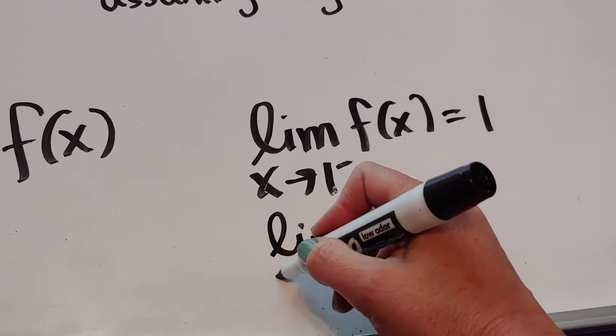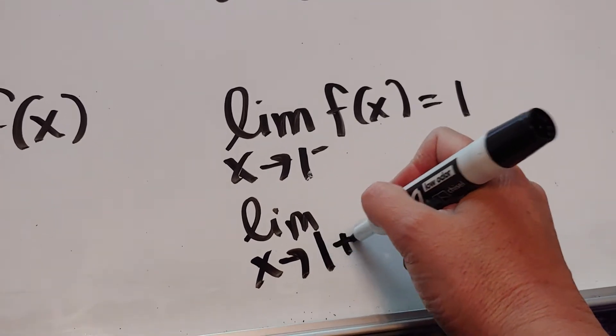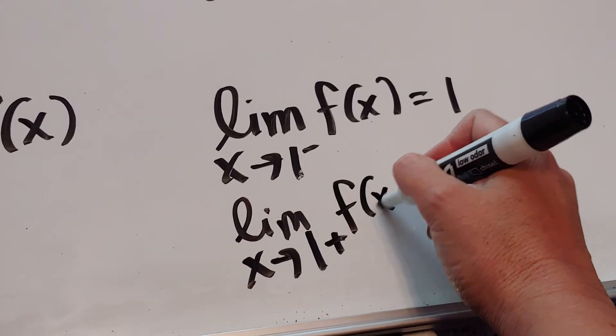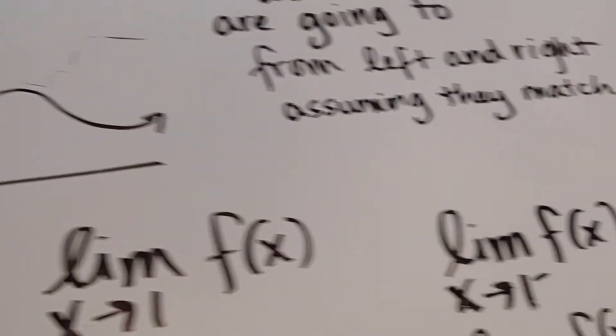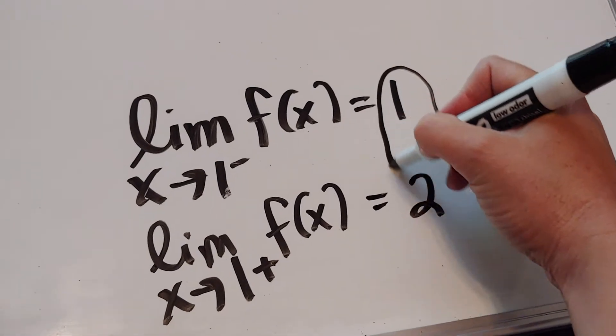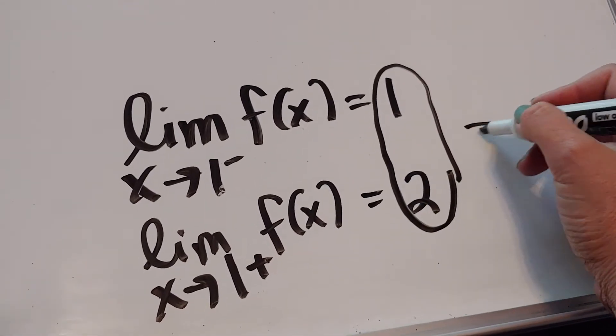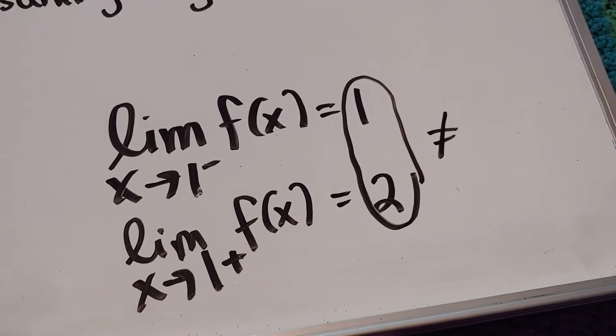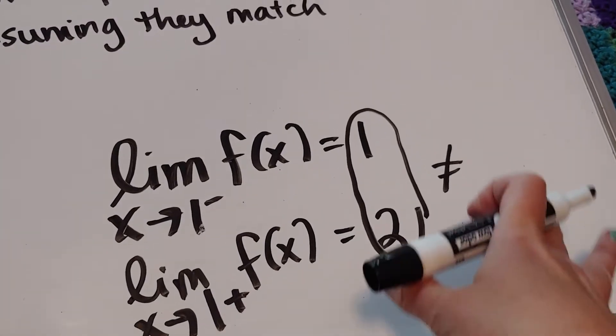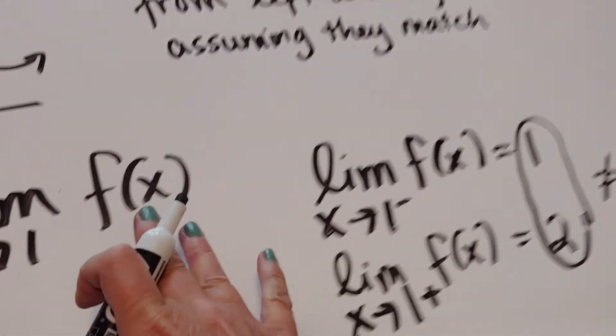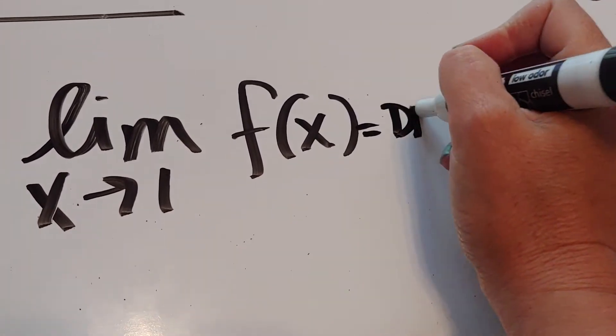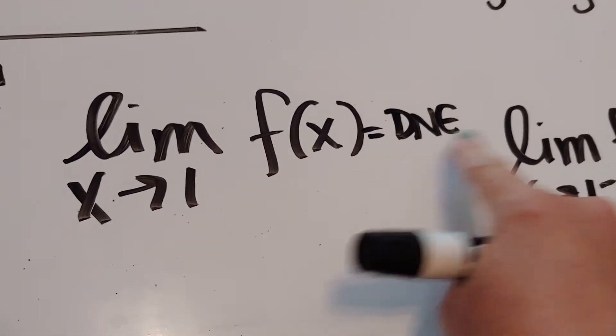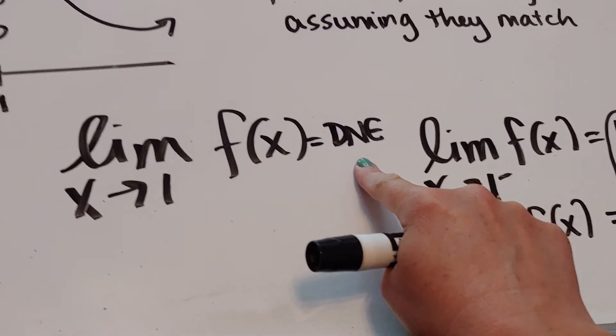From the right, if I go back to my picture, from the right, I'm going to a y value of 2. Do these numbers match? No. 1 does not equal 2 in this world. Sorry, guys. So when that happens, what we say is that the limit does not exist. When these two numbers are different, it does not exist.